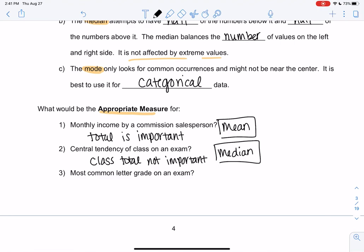So I would say median is better for test scores. And then most common letter grade—letter grade is a category, categorical. So the only thing that makes sense is the mode. And that's section 3-1.